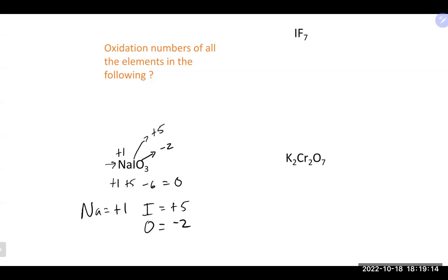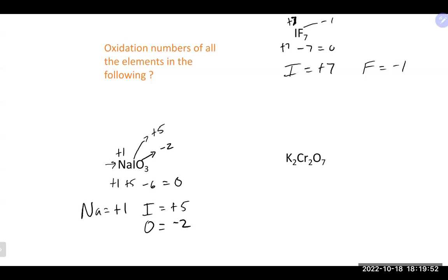For IF₇: fluorine is always −1 because it is the most electronegative element — even when bonded, it pulls all electrons toward itself. Seven fluorines give −7. The compound is neutral, so the iodine must be +7. Therefore: iodine is +7 and fluorine is −1.